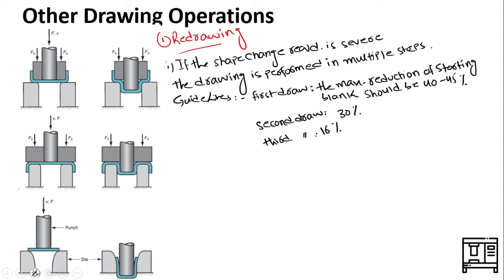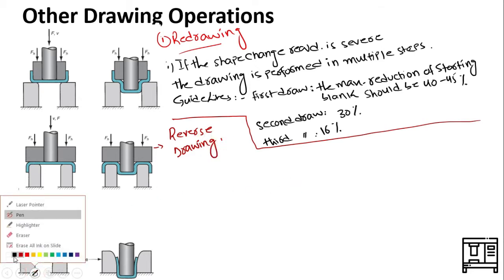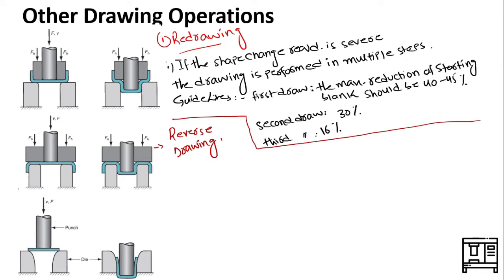There is another specialized type called reverse drawing. In the reverse drawing operation, a drawn part is positioned face down on the die so that the second drawing operation produces a configuration as shown in the diagram. Once we have performed the drawing operation, we place the part in the die cavity in the inverse direction such that it faces downwards. Although it may seem that reverse drawing produces more severe deformation than redrawing, that is not the case in reality.